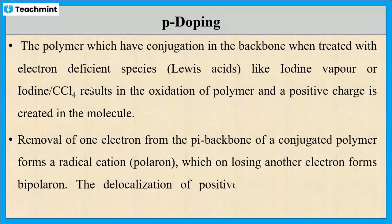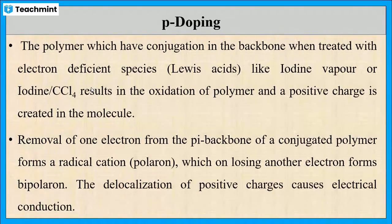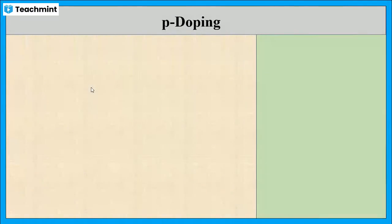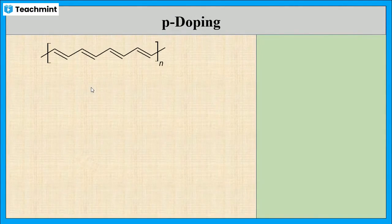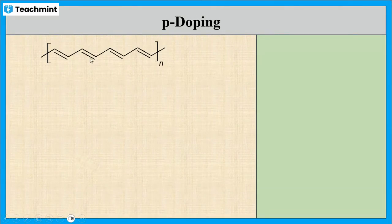Now let us see the P-doping mechanism of polyacetylene. Polyacetylene consists of a number of carbon atoms linked by alternating single and double bonds. Before doping, in the neutral form, there is a sufficient energy gap between the valence band and the conduction band.